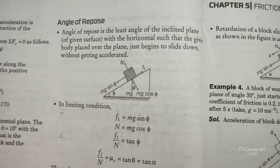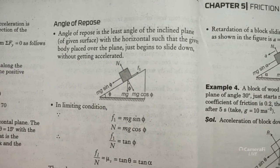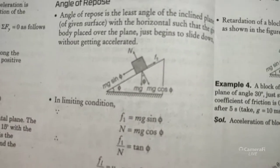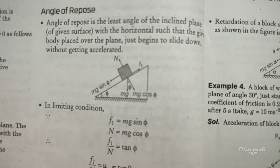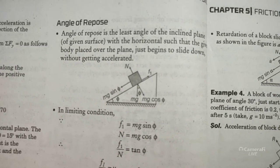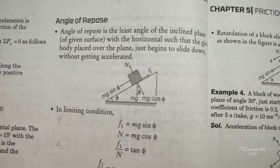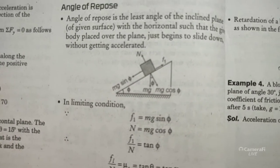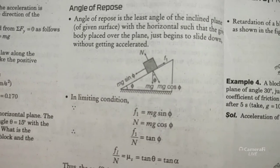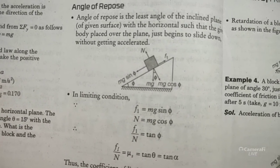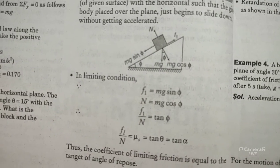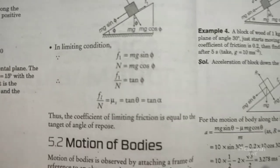Angle of repose: it is the least angle of an inclined plane with the horizontal such that a body placed on it just begins to slide. At angle φ, weight mg splits into components: mg cosφ (perpendicular to plane, balanced by N) and mg sinφ (along plane, balanced by friction f1). So f1/N = tanφ, which equals μs — the coefficient of static friction.